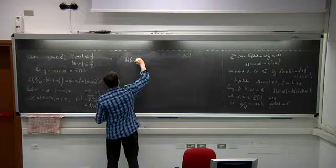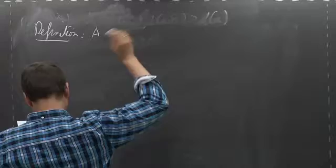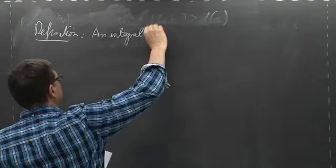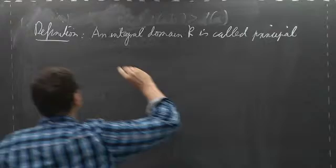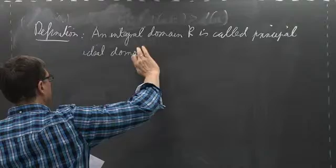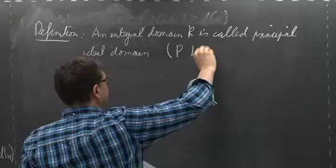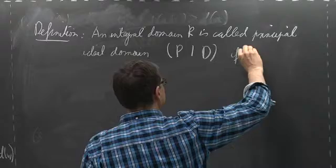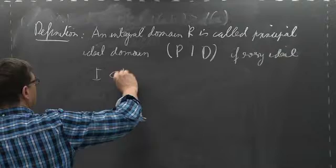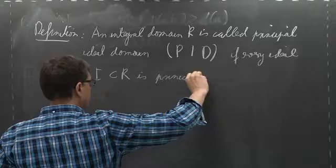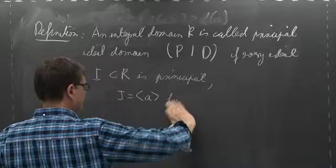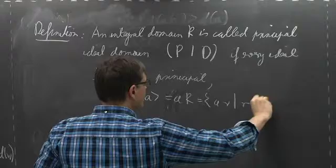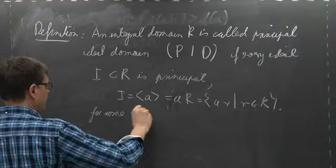Definition: an integral domain R is called a principal ideal domain, abbreviated PID, if every ideal I in R is principal — that is, I equals (a) for some a in I, meaning I equals a times R.